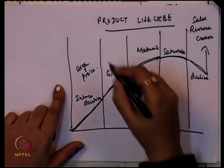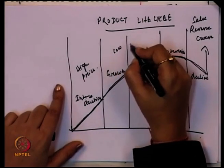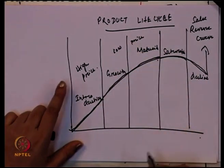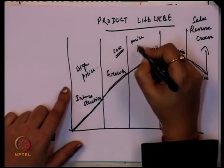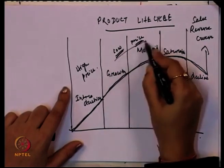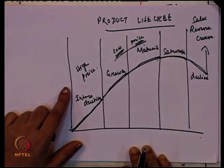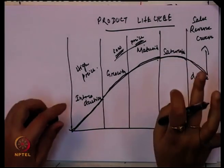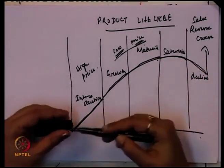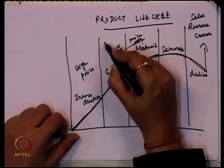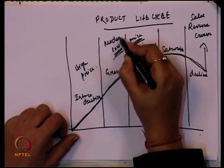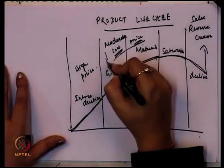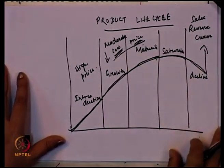In the case of growth and maturity, generally a low or moderate price is charged because the product has already reached a stage where people know about it. This moderate pricing continues into the saturation and decline stage. We can say this is the value or moderate price for the product in the case of growth and maturity.